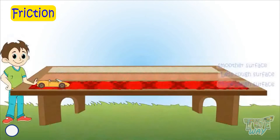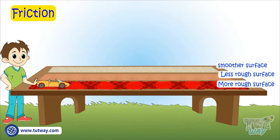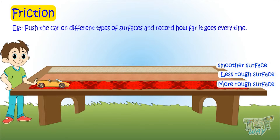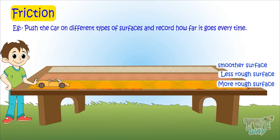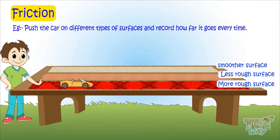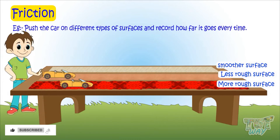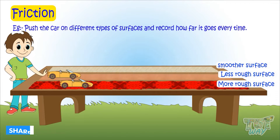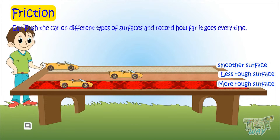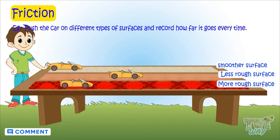Take a toy car. Push it on different types of surfaces from rough to smooth and see and record how far it goes every time. First push the car on a very rough surface like a carpet and see how far it goes. Now push it on a less rough surface like a cardboard. Now push it on a very smooth surface and see how far it goes.